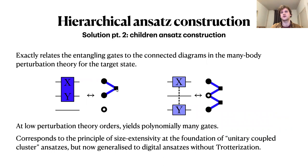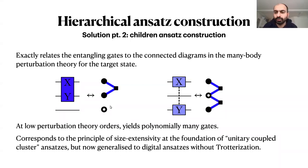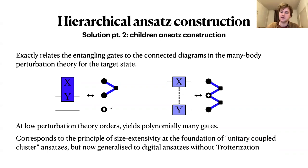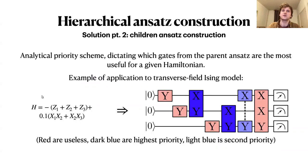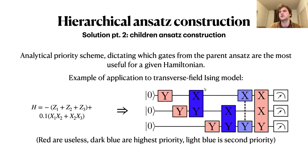Each diagram corresponds to including a specific rotation gate in the circuit. The unimportant gates are unimportant specifically for ground state preparation of this Hamiltonian — if you had a different Hamiltonian the picture would be entirely different, because the parent ansatz in principle covers the entire Hilbert space and which gates you choose depends on the specific system.